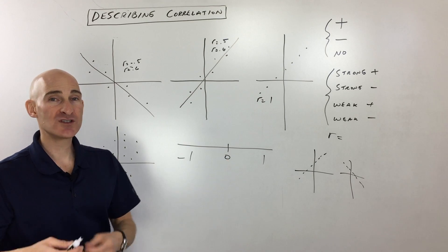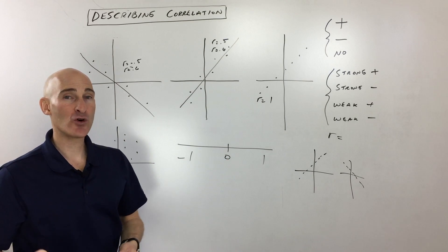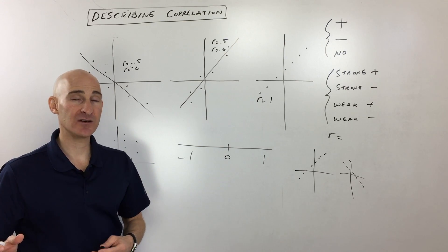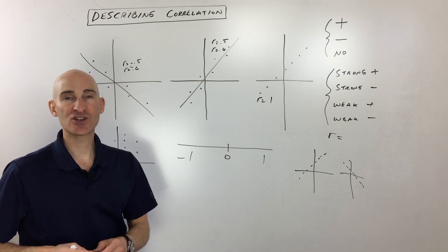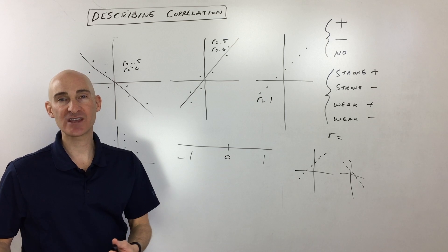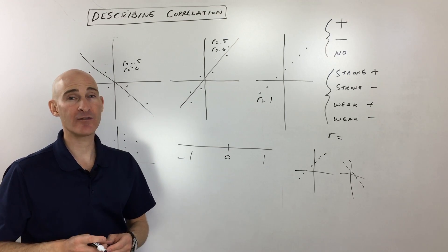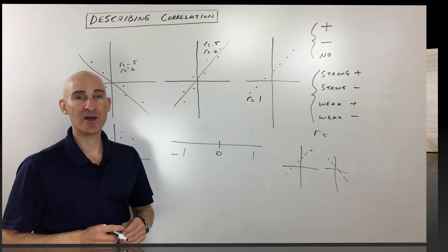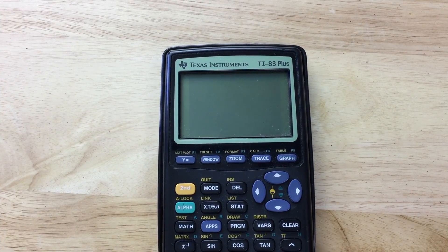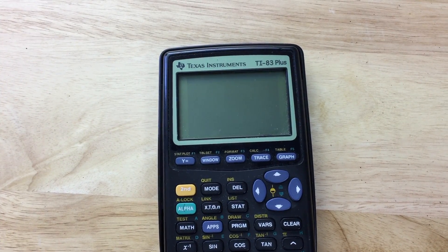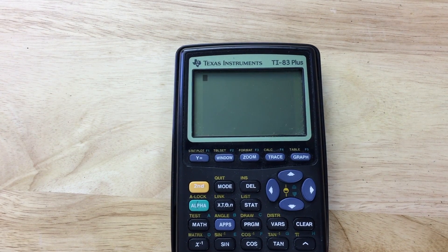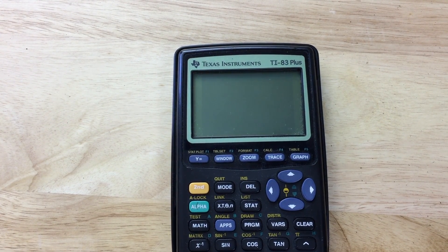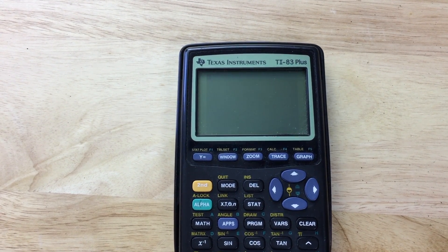So that's an overview of how correlation coefficients work. Let's go ahead and take a look at the graphing calculator, and I'm going to show you how exactly to calculate that r value when you're drawing a line of best fit. Here we are with the TI-83 graphing calculator — you can do the same thing on the TI-84 and some other graphing calculators.